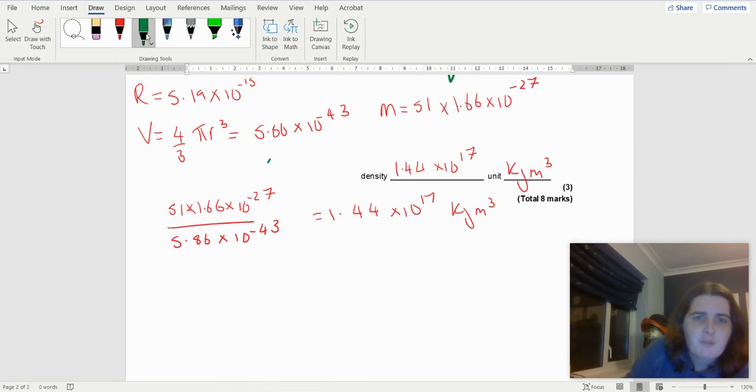So importantly, you get 1 mark for the kilogram per meter cubed there. So 1 mark for the actual method, 1 mark for the answer, and they're allowing quite a big range. And if you see the word unit, even if you don't know what you're doing, have a go.